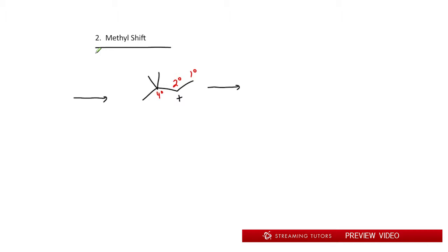We don't want a secondary carbocation if we have a higher degree next door. If it's further away, no shift - it has to be right next door. But this is a quaternary carbon, that means that it has no H's.